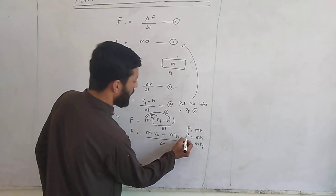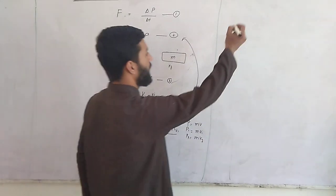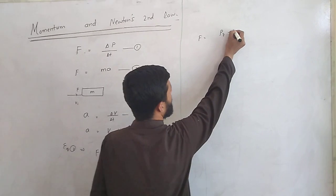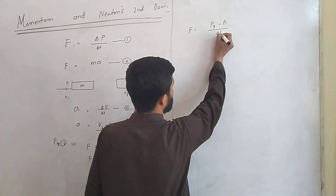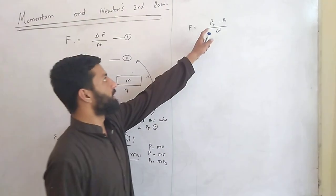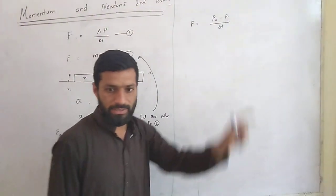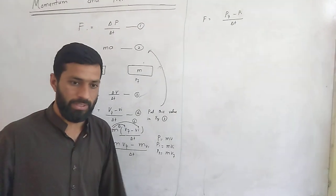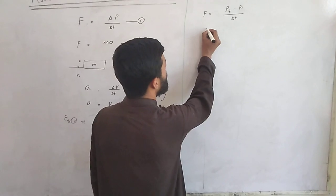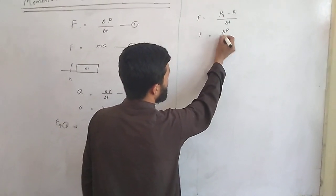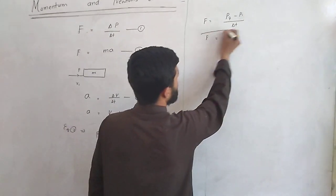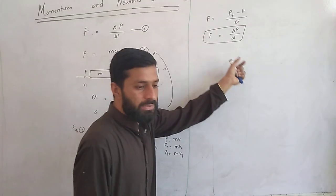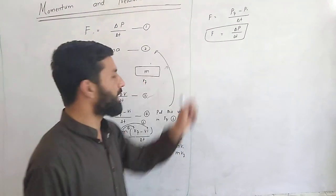Putting these two values into the equation, it takes the form F is equal to PF minus PI divided by delta T. Here, PF is the final momentum and PI is the initial momentum, so this shows the change in linear momentum. Therefore F is equal to delta P divided by delta T, proving that the rate of change of linear momentum is called linear force.